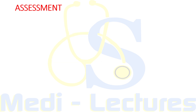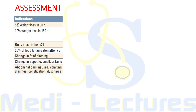The indications for assessment of unintentional weight loss are clearly defined. If the patient has 5% weight loss in the last 30 days or 10% weight loss in 180 days, assessment is required. Other indications include a resultant BMI of less than 21, 25% of food left uneaten for 7 days, change in fitting of clothing, change in appetite, smell or taste, abdominal pain, nausea, vomiting, diarrhea, or constipation along with weight loss.